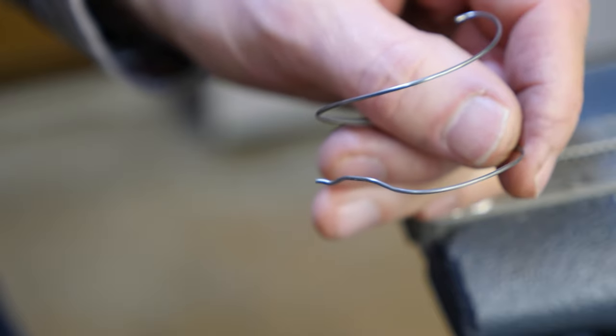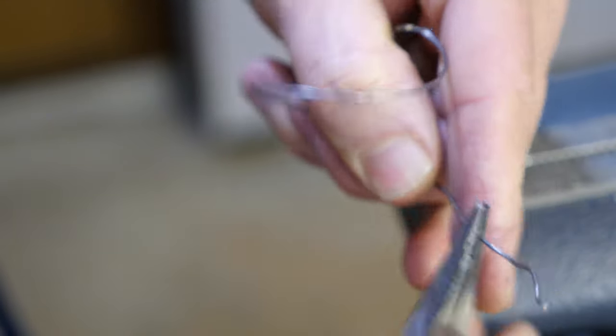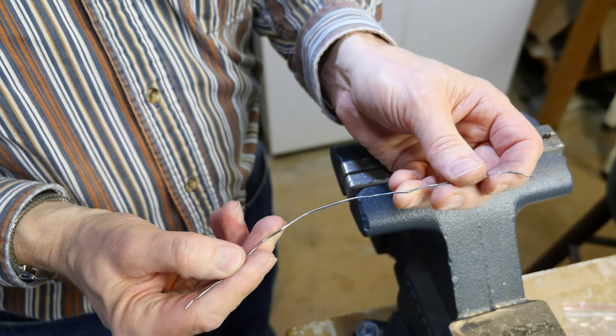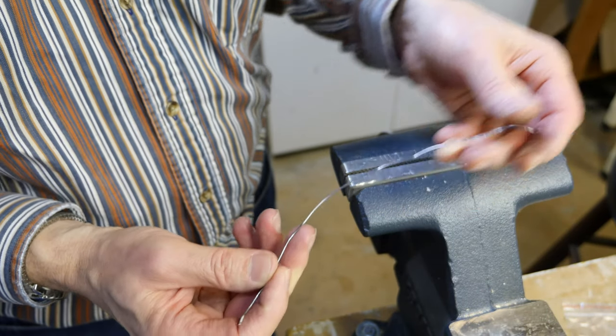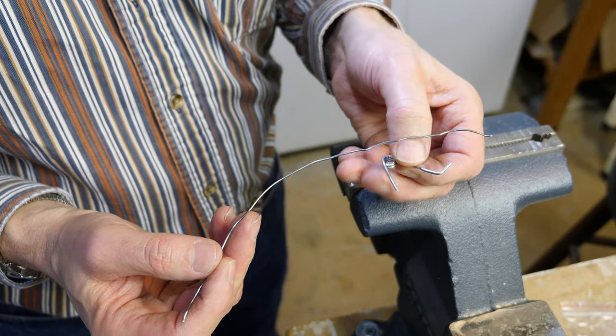So I take my needle nose pliers and work over the spring wire until it's more or less straight. It takes some working to get it right. Now that the wire is more or less straight, I can shape it into the form it needs to be in to work properly on the garbage can lid.